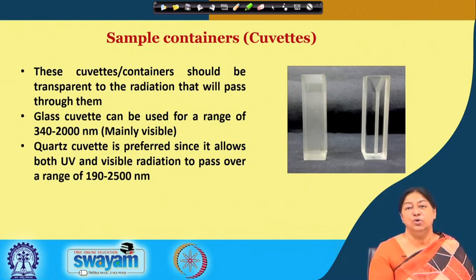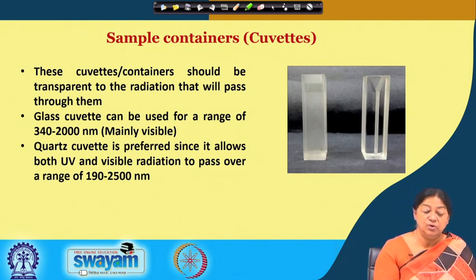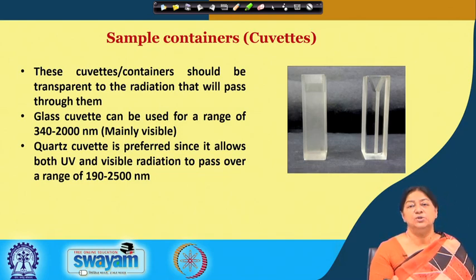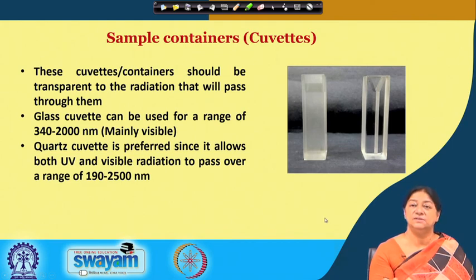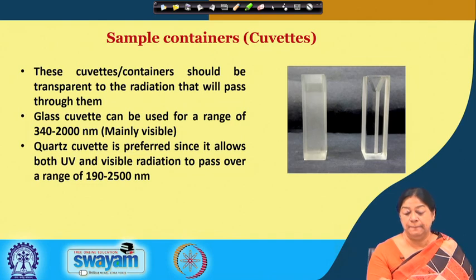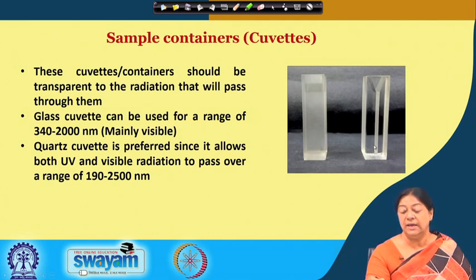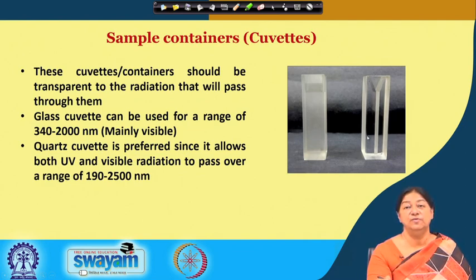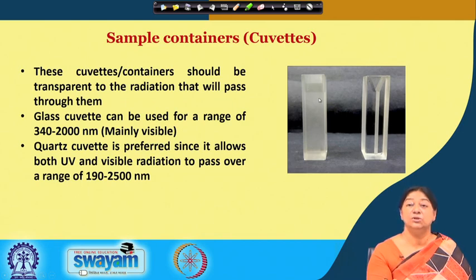The sample containers are called cuvettes. We need transparent cuvettes — glass or quartz cuvettes — which have minimum absorption of light, because we do not want the sample cell holder to absorb any light; only our sample should absorb the light. There are specific cuvettes with extremely narrow bore for when we have a lower volume of solution. Different volume cuvettes can be purchased for the equipment, and they are usually one centimeter by one centimeter, so the path length is one centimeter.